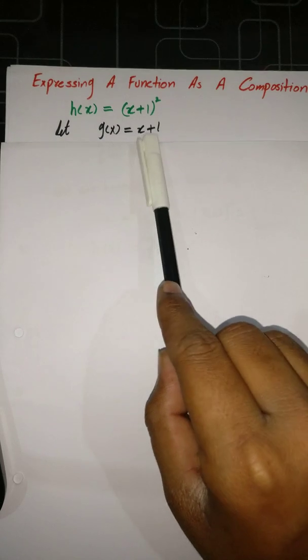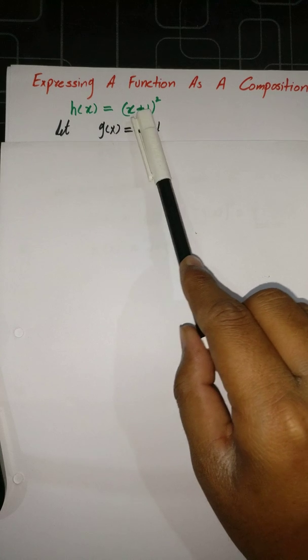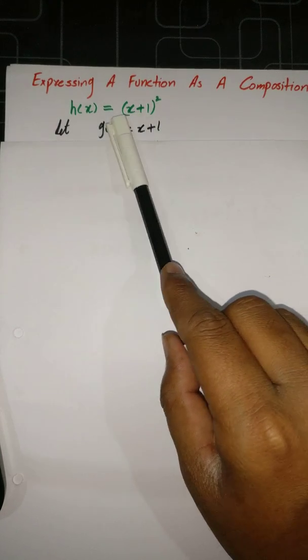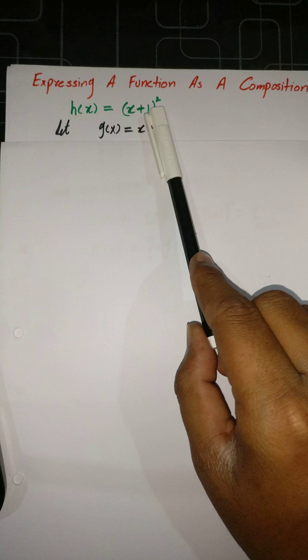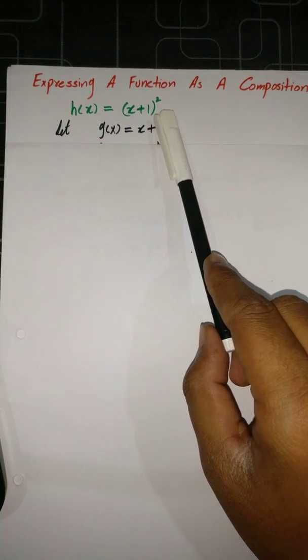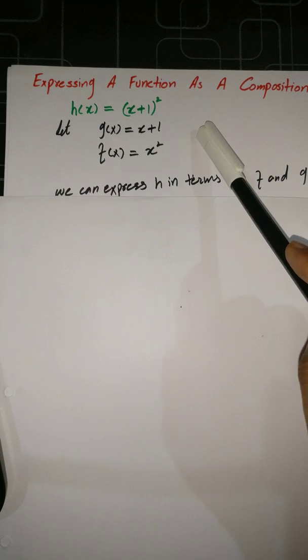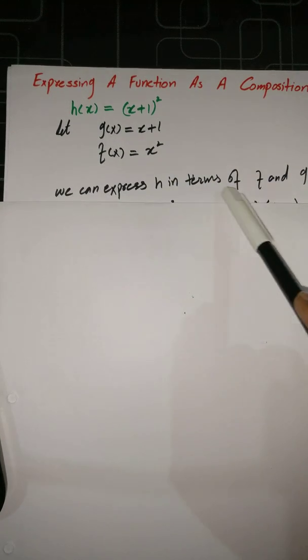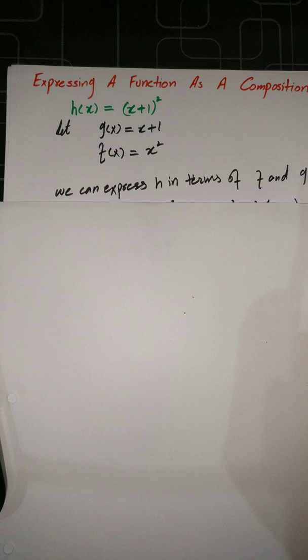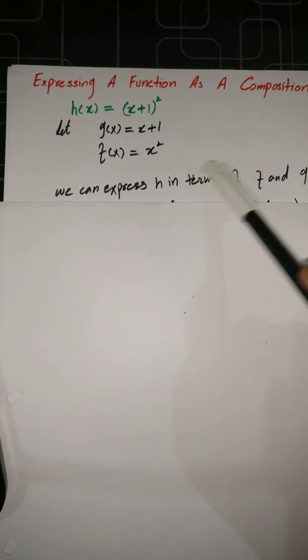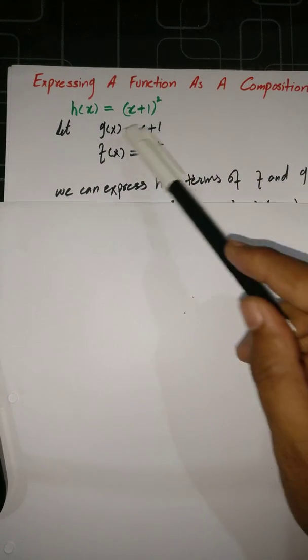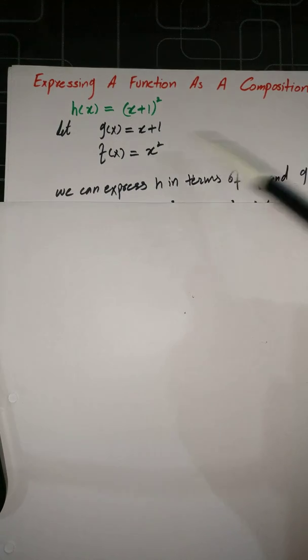So g(x) is equal to x+1, and the squared term — since we have a whole square — we just suppose that we have another function f(x) which is x squared. So we can write the function h(x) in terms of g and f. We can express h in terms of f and g.